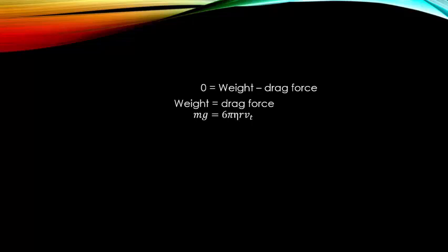Inserting values: weight is equal to mg, and drag force is given by Stokes' law as 6πηrv. If you don't know about Stokes' law or drag force, kindly visit the other tutorial given in the link. Rearranging this equation, the terminal velocity becomes: vt = mg / (6πηr).